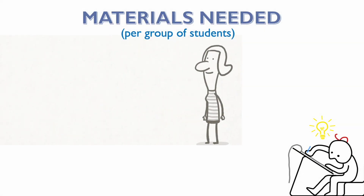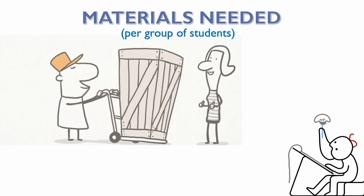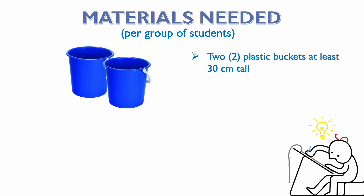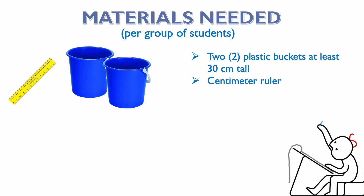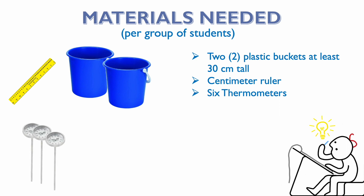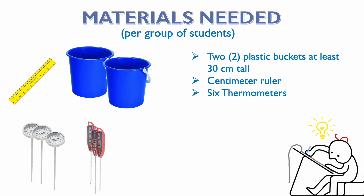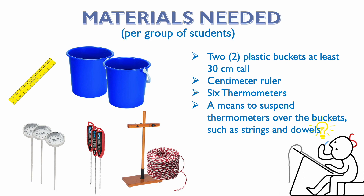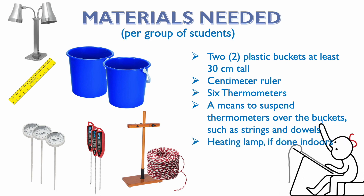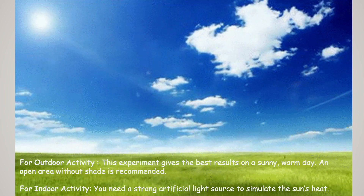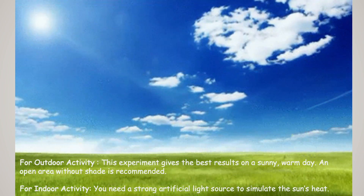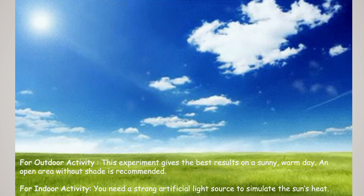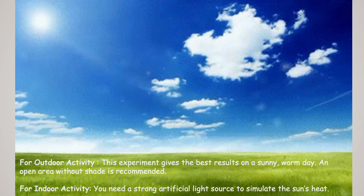Here are the materials you need: two plastic buckets at least 30 centimeters tall, a centimeter ruler, and six thermometers. For this demonstration we'll be using three soil thermometers and three digital water thermometers. You also need a means to suspend thermometers over the buckets, such as strings and dowels. If done outdoors, you need a heating lamp to simulate the sun's rays. This activity is best done on a sunny, warm day in an open area without shade. If done indoors, you need a strong artificial light source such as a heating lamp.